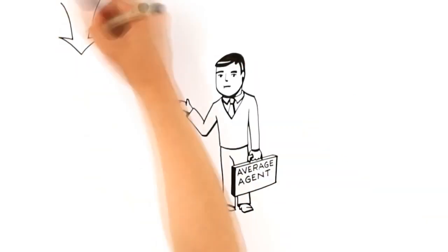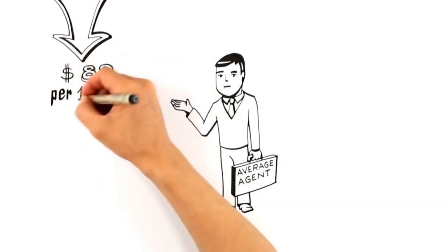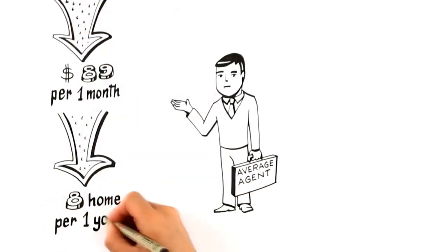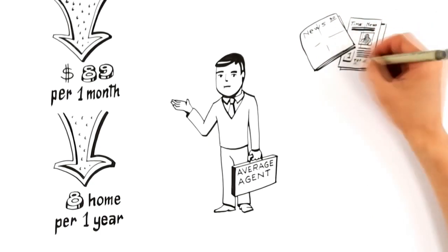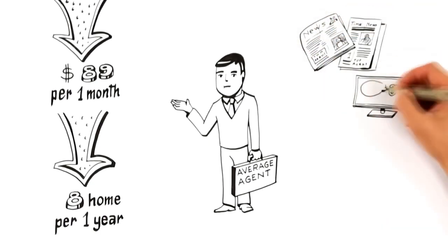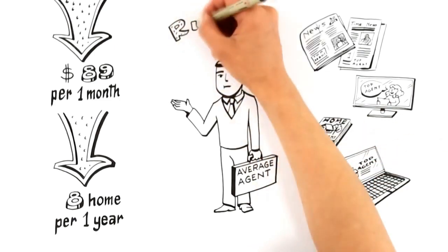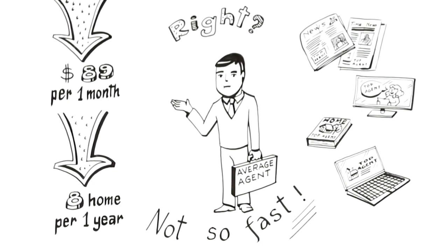Research shows that the average agent only spends $89 a month on marketing and only sells an average of eight homes per year. On the other side, top agents will tout their large budgets for newspaper, TV, home magazines, and a list of hundreds of websites where they advertise. So you'd think that the answer is obvious. Hire the top agent, right? Not so fast.